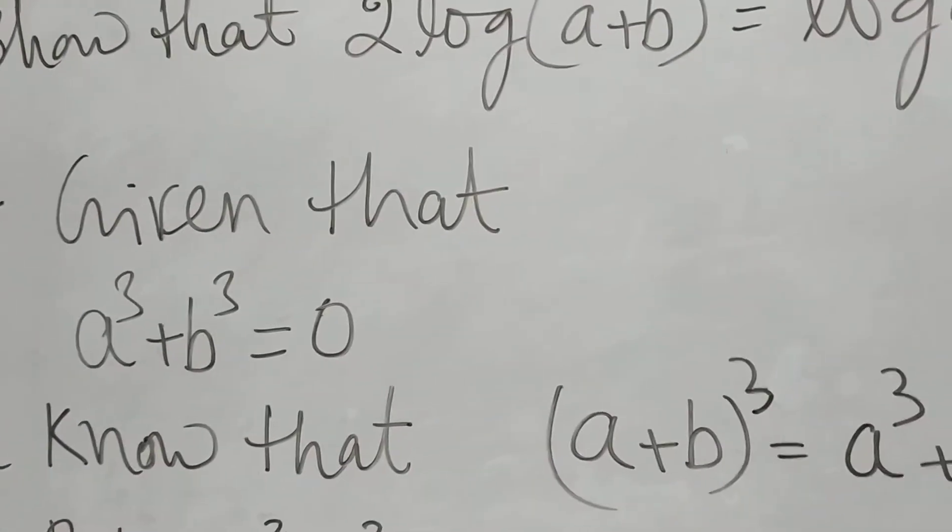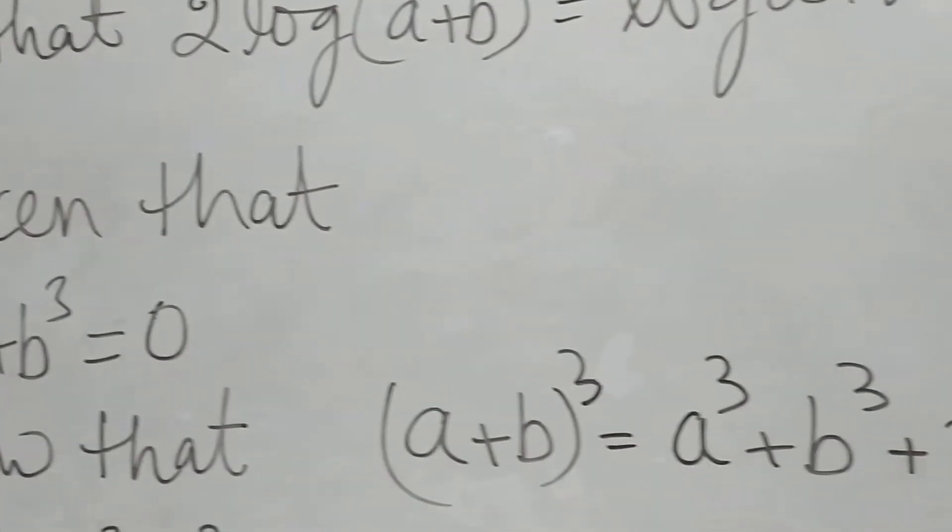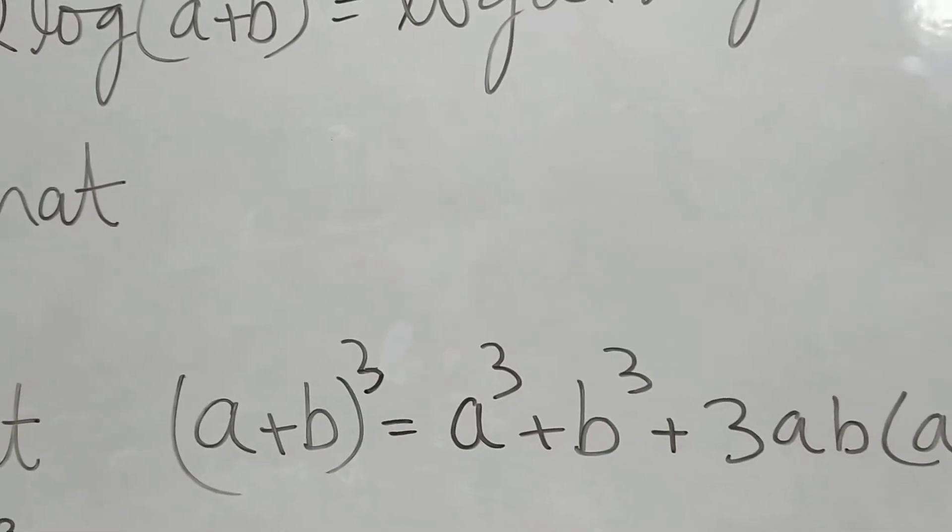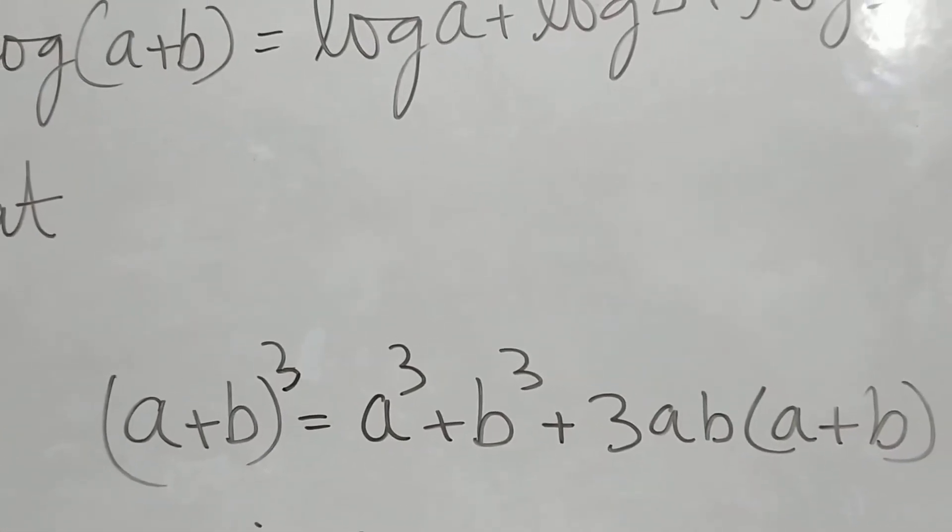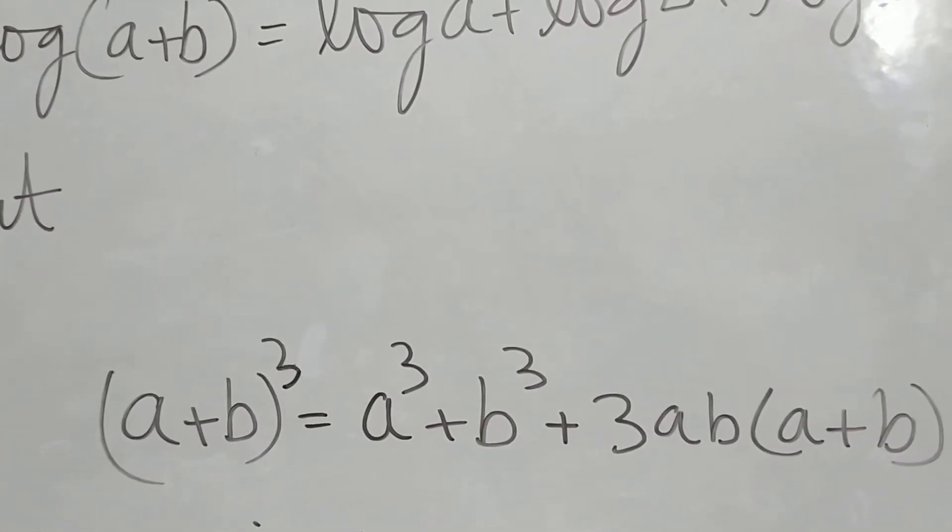We know that (a+b)³=a³+b³+3ab(a+b). This formula we know.